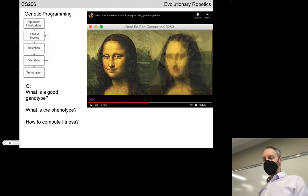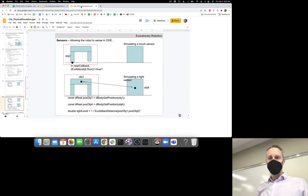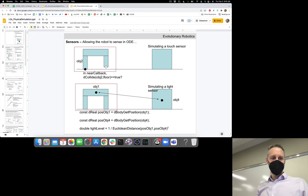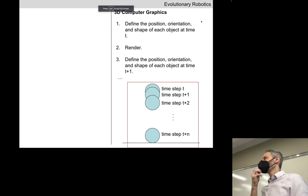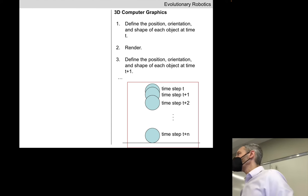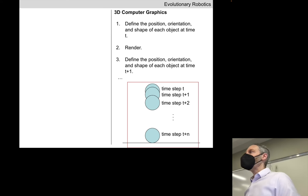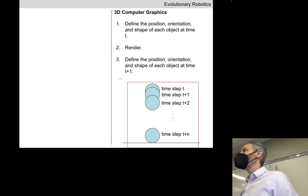That concludes our discussion of evolutionary algorithms. Shifting mental gears: we're going to be evolving virtual robots, and you're already building virtual robots in physical simulation. Let's go back a few decades before physics engines existed. If you wanted to create an interesting, realistic 3D simulation or animation, you had to do all the work yourself — defining all the virtual objects inside that scene.